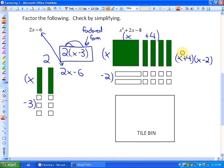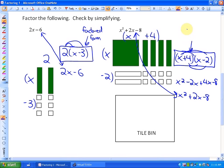We could check that by expanding and simplifying. We would have x squared minus 2x plus 4x minus 8, and simplify to be x squared plus 2x minus 8. As you can see, that is equivalent to the original simplified form. So our factors here would be x plus 4 and x minus 2. That's our factored form.